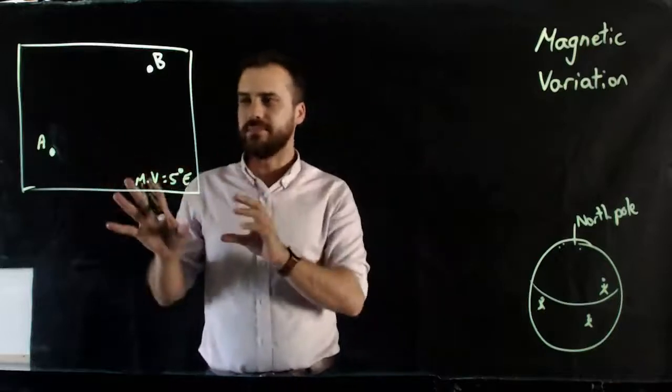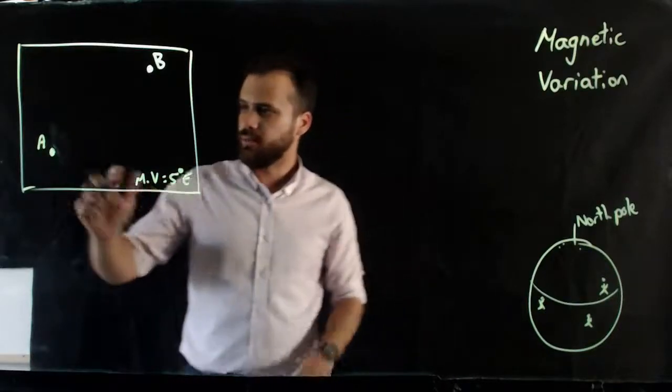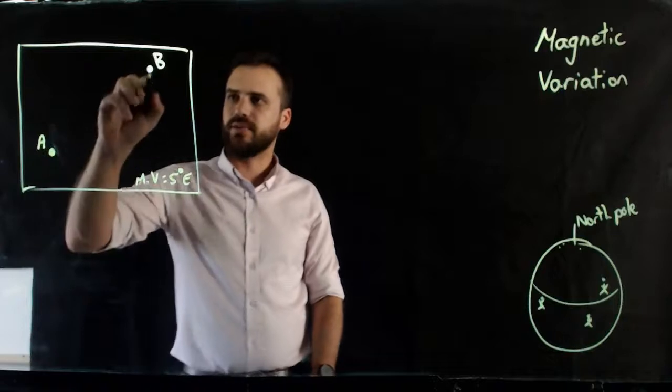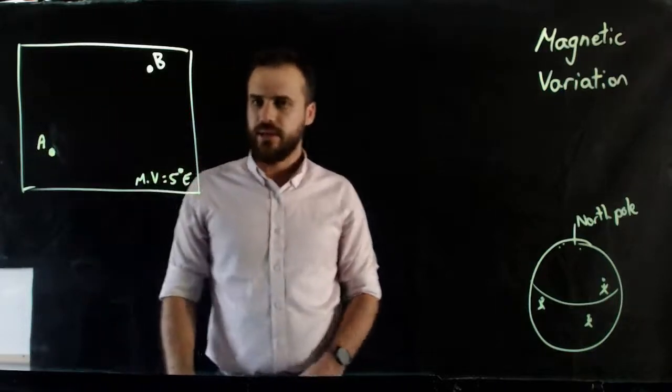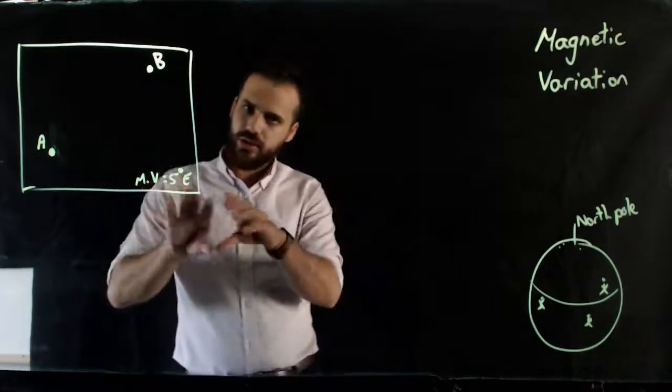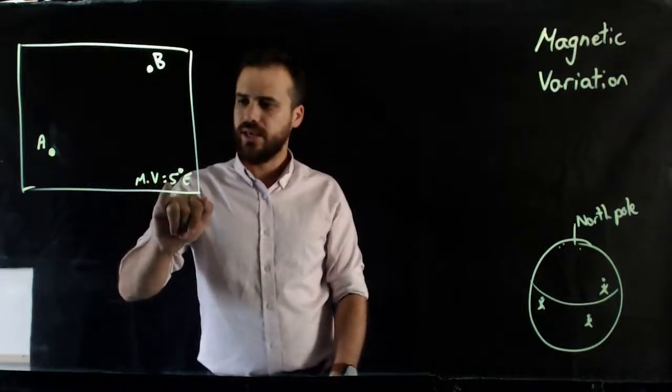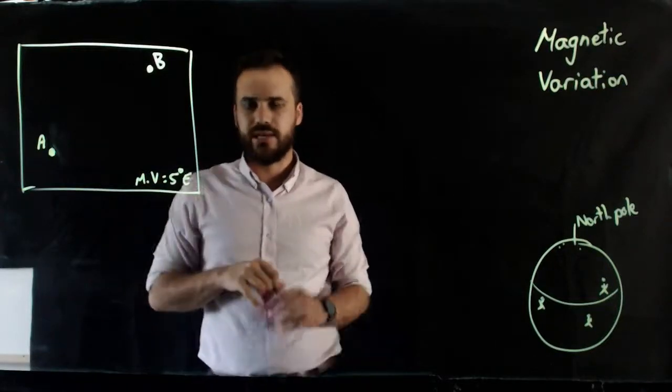So here's my basic map, very basic. We have a point, a point A, and we have another point, point B. Now, you can see in the bottom right-hand corner of this map, I've written MV equals 5 degrees east.